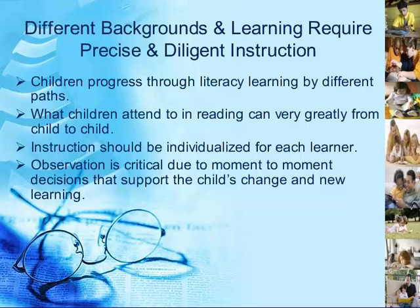Different backgrounds and learning require precise and diligent instruction. Children progress through literacy learning by different paths. What children attend to in reading can vary greatly from child to child. Instruction should be individualized for each learner. Observation is critical due to moment-to-moment decisions that support the child's change and new learning.